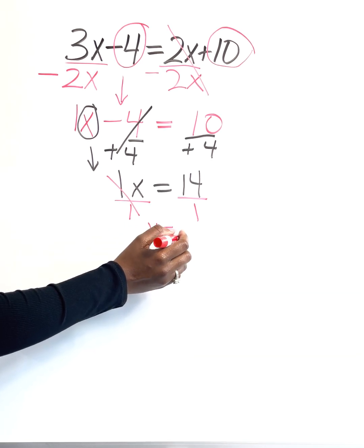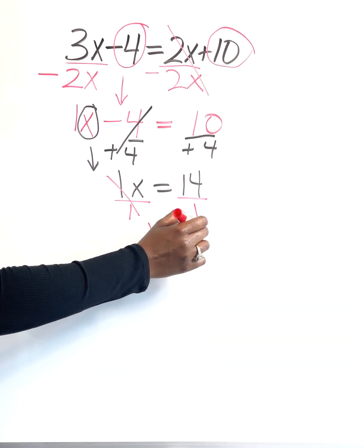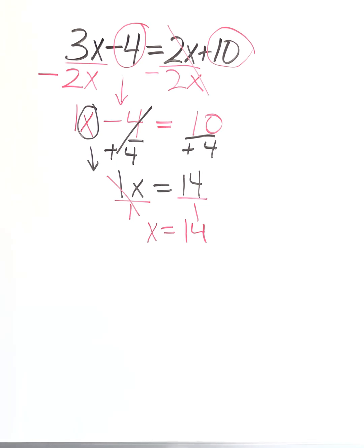And if I do 14 divided by 1, that's going to give me 14. Now, anytime you do equations, you always want to go back and check your answer because it's really easy to make a mistake when you're doing arithmetic. And arithmetic, of course, is just addition, subtraction, multiplication, and division. So you always want to check to make sure that your answer is correct so that you get the points that you need for your exam.